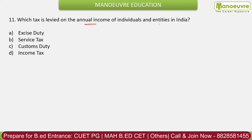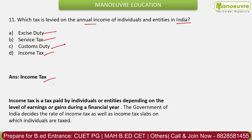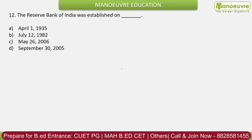Question 11: Which tax is levied on the annual income of individuals and entities in India? Options: excise duty, service tax, customs duty, income tax. The correct answer is income tax. Income tax is paid by individuals or entities depending on the level of earnings during a financial year. It is a direct tax. GST is an example of an indirect tax.